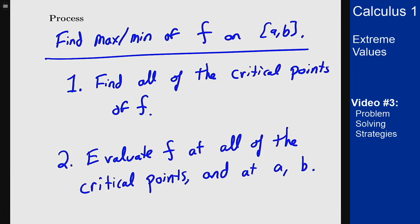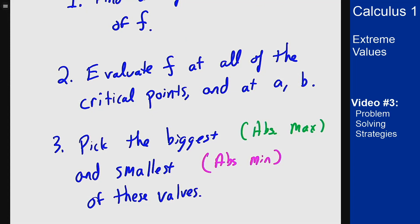Then you just want to look at your list and pick the biggest and smallest one. The biggest gives the absolute max and the smallest gives the absolute min. And that outlines the process of how you find the absolute max and absolute min of continuous functions on closed intervals.